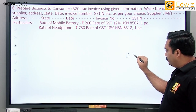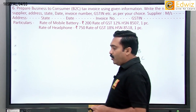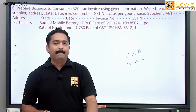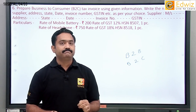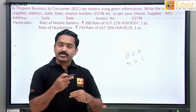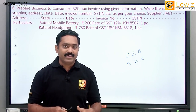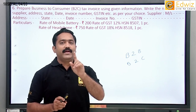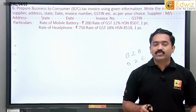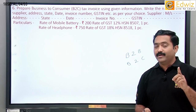In B2B transactions, you need to write two GST numbers — because both parties are businesses and both must have registered GST numbers. In B2C transactions, when you are billing a consumer directly, the consumer's GST number is not required. Only the seller's GST number is written in a B2C invoice, because the government tracks GST compliance using the trader's registered number.